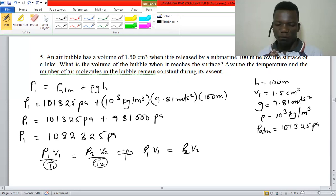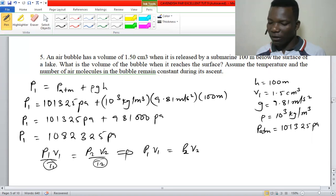The initial volume is that one, and then the bubble has gone to the surface of the lake, so the final pressure is going to be the atmospheric pressure. We have calculated the initial pressure, so we are looking for V2.